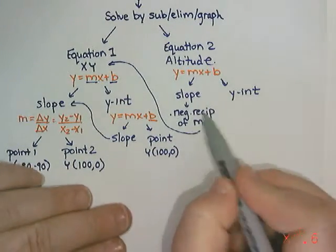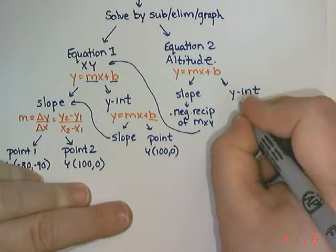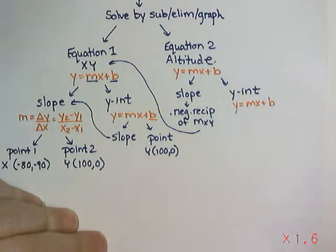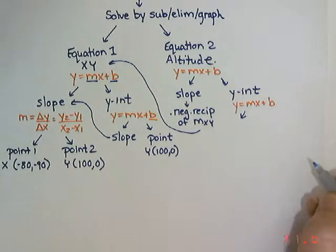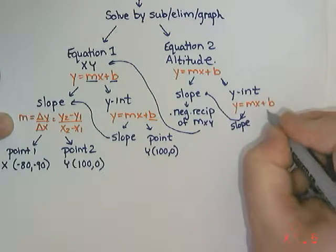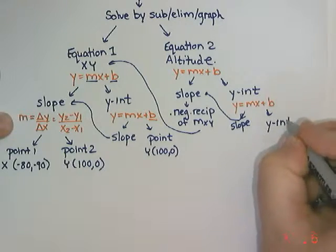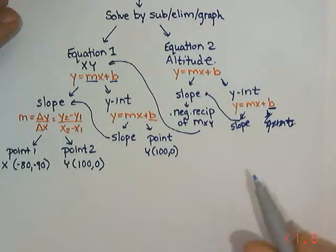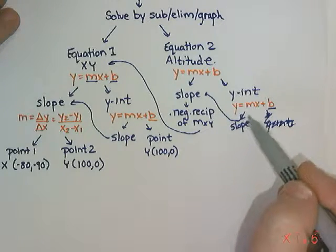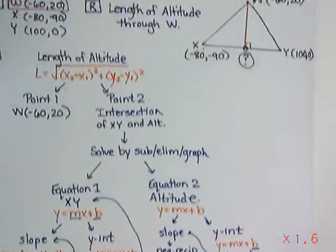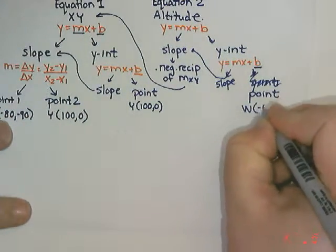Once I know my slope, which is going to be the negative reciprocal of the slope over here, I also need to find the y-intercept using y = mx + b. And we're going to use slope, it's going to be the slope that was given, so we're going to take that from here. And we also need the y-intercept, which we're going to find by putting in the slope and a point. It has to be a point on my altitude, and the only point we know on our altitude is point W. So we're going to use W, which is (-60, 20).